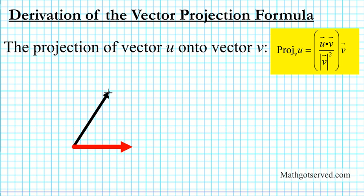Let's start by naming the vectors. Let's call this black vector right here vector u, and let's call this vector right here vector v. So what does the projection look like? We're going to be projecting vector u onto vector v. The projection of u onto this vector is basically the component of u in the direction of v — something like this. So this piece right here is basically the projection of vector u onto v.